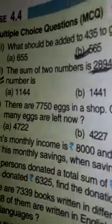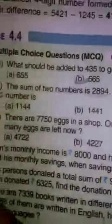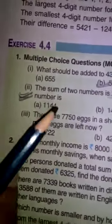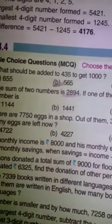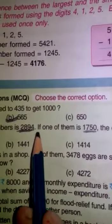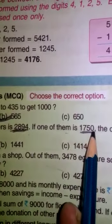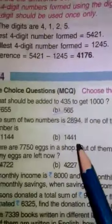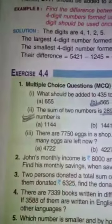So students, exercise 4.4 question number MCQ, question number 2 was your homework. So your homework is the sum of two numbers is 2894. If one of them is 1750, the other number is what? Now see here I have done for you.